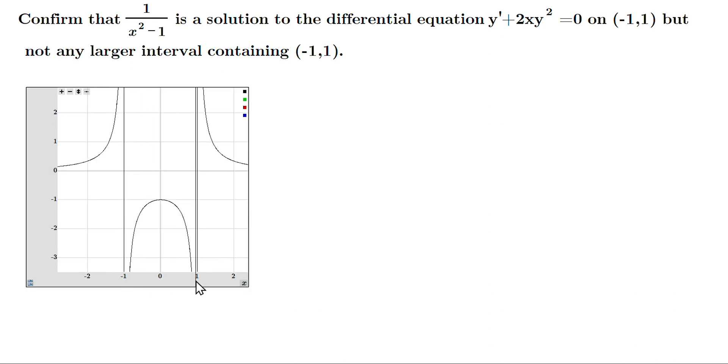So if you try to include any interval bigger than (-1,1), for example like -2 to +2, you would have these vertical asymptotes where the function is not defined. So that's an issue.